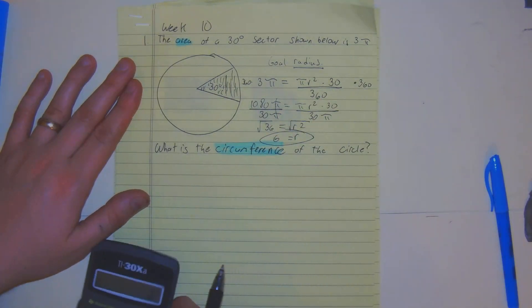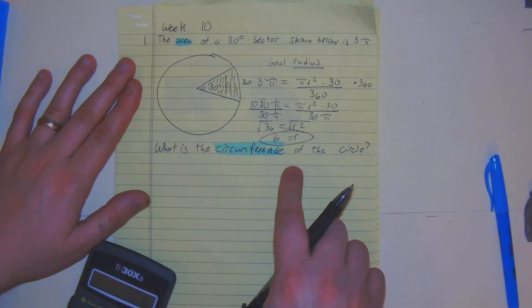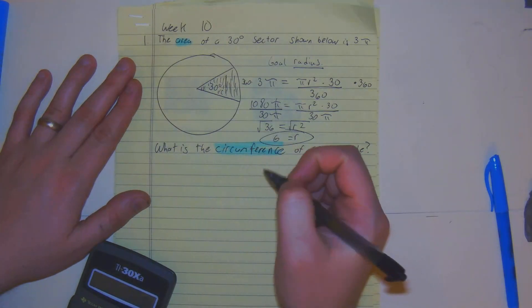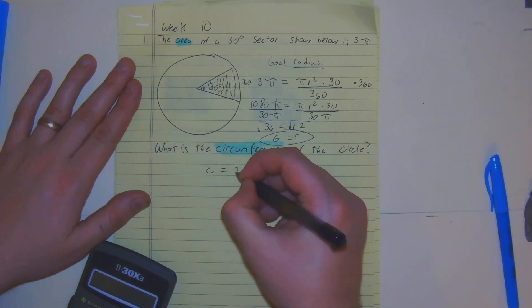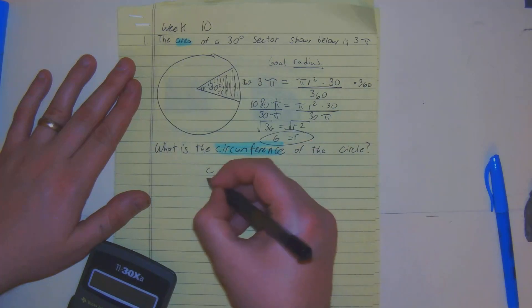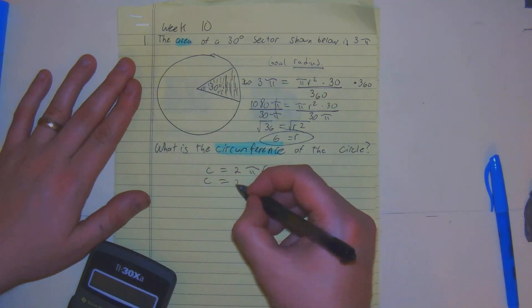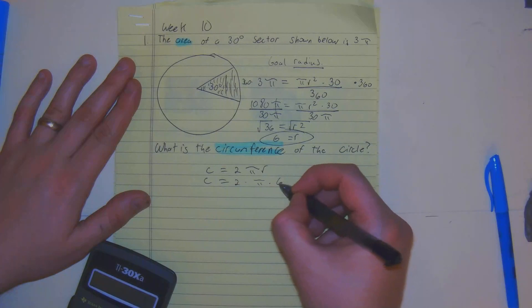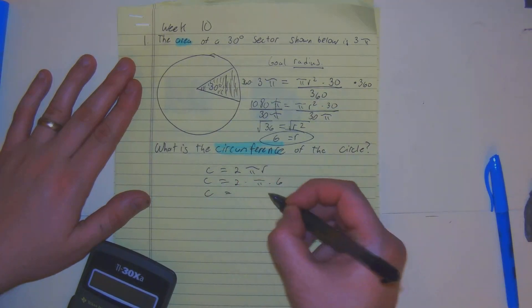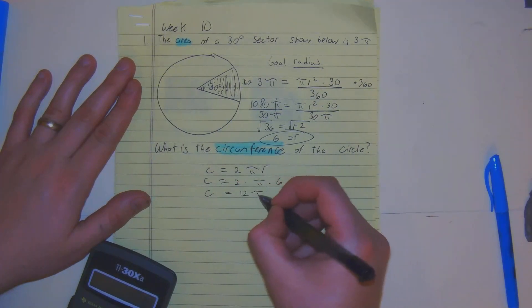Here, the circumference of the circle would be this. C is equal to 2 pi r. C is equal to 2 times pi times 6. 6 times 2 is 12. We get 12 pi.